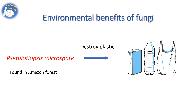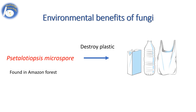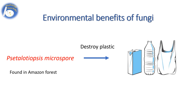Recently, one mushroom was found in the Amazon forest that can destroy plastics. The fungus name is Pestalotiopsis microspora. In research, it was found that it can feed off polyurethane, a polymer that is commonly found in everything from hard plastic to synthetic fibers.